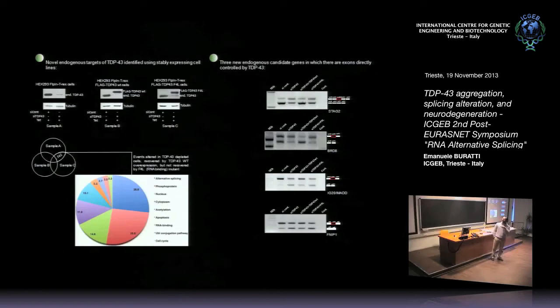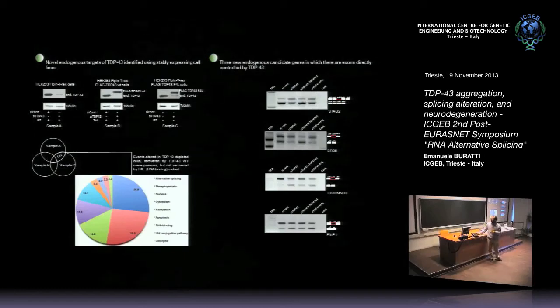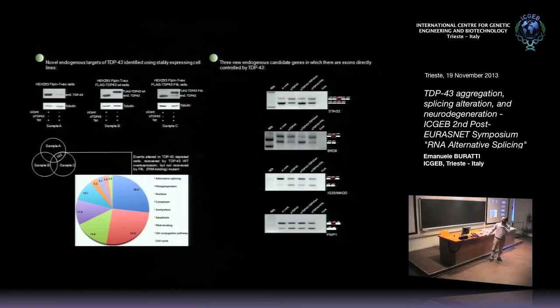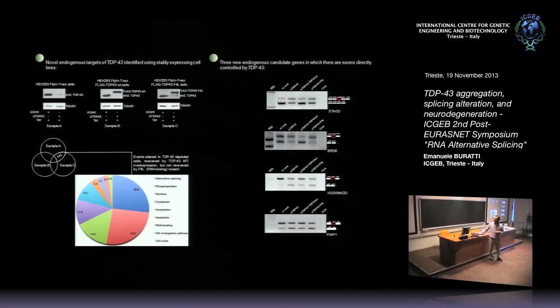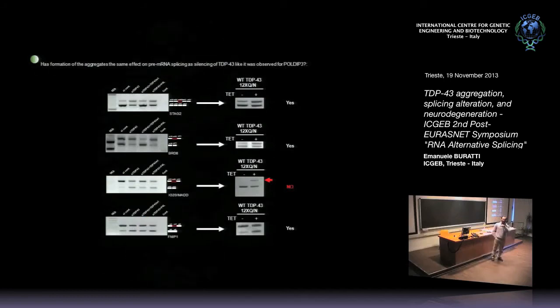And if you put back a mutant TDP-43 that cannot bind to RNA then there is no effect with respect to the siRNA TDP-43 induced change. And so how does the splicing of all these genes now compare with the splicing when we have the expression of the 12-QN aggregates? And you can see something that is very interesting. First of all, very pleasingly, most of the splicing that we see in the presence of the aggregates is mimicking very closely the effect that we see when we deplete the endogenous TDP-43. But this is not true for all the targets. For example for MAD here you see that there is a small decrease in exon inclusion just like with the siRNA, but you have also something else going on at the same time and this is the activation of a pseudo exon in the downstream intron.